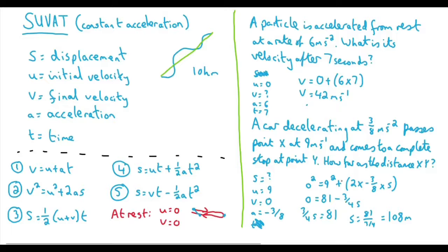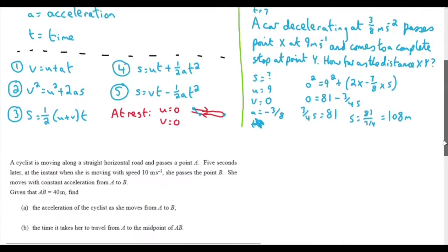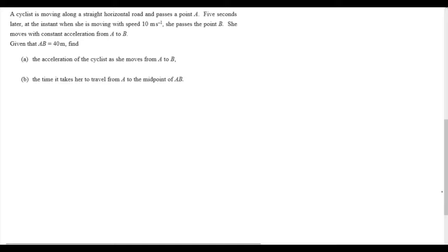If we're okay with that, let's then just finish off by looking at an exam question. So we're told that a cyclist is moving along a straight horizontal road and passes five seconds later. At the instance when she is moving with speeds 10 metres per second, she passes the point B. She moves with constant acceleration from A to B. Given that AB is 40 metres, find, first of all, the acceleration of the cyclist as she moves from A to B. And then the time it takes to travel from A to the midpoint of AB.